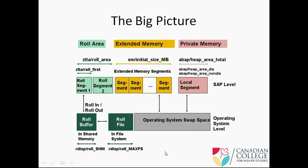At the operating system level, data is rolled up to the roll buffer, and the roll buffer is rolled to a file in the file system. The operating system swap space is also used for all these memory activities.